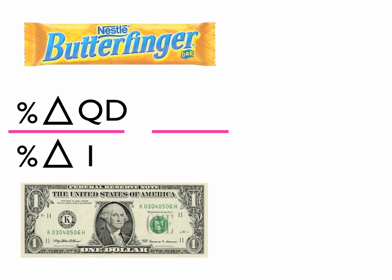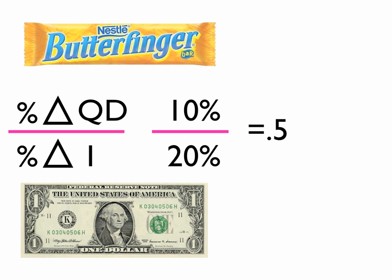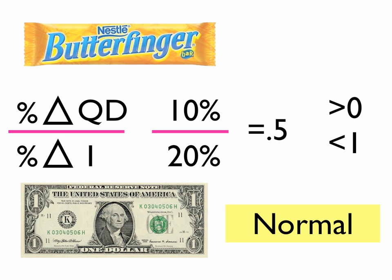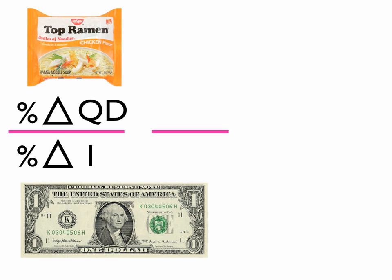Let's look at a couple of examples. Take a Butterfinger bar, for example. If your income increases by 20% and the percentage change in quantity demanded increases by 10%, that value would be 0.5. We note that the value is greater than 0 but less than 1, so that would be considered a normal good.